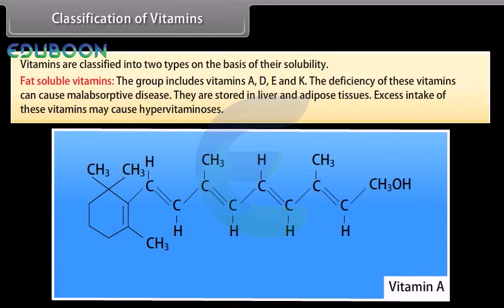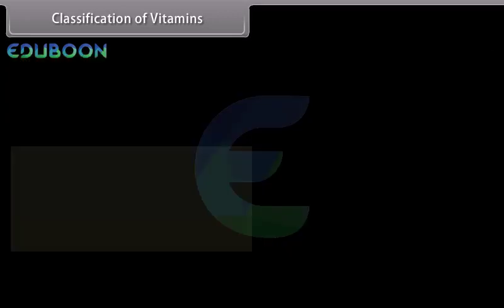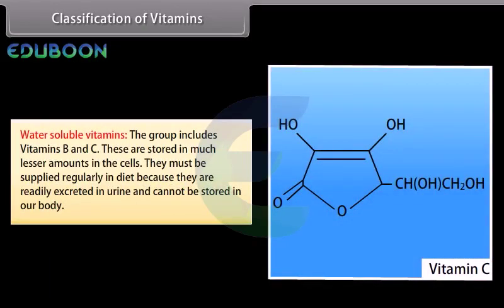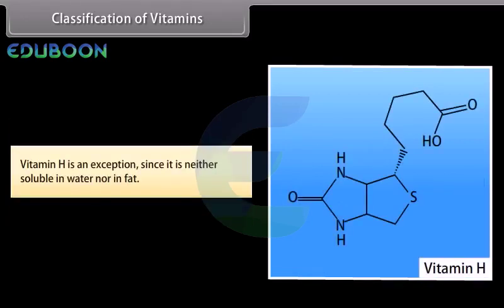Vitamins are classified into two types on the basis of their solubility. Fat-soluble vitamins: this group includes Vitamins A, D, E and K. The deficiency of these vitamins can cause malabsorptive disease. They are stored in liver and adipose tissues. Excess intake of these vitamins may cause hypervitaminosis. Water-soluble vitamins: this group includes Vitamins B and C. These are stored in much lesser amounts in the cells and must be supplied regularly in diet because they are readily excreted in urine and cannot be stored in the body. Vitamin H is an exception since it is neither soluble in water nor in fat.